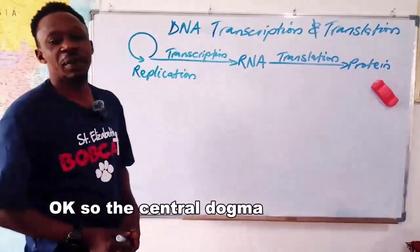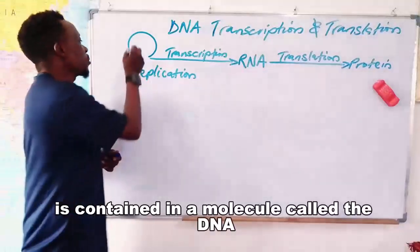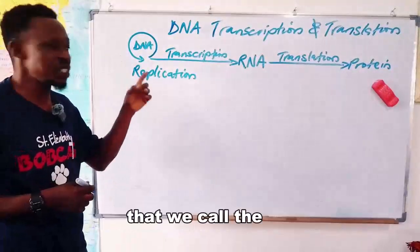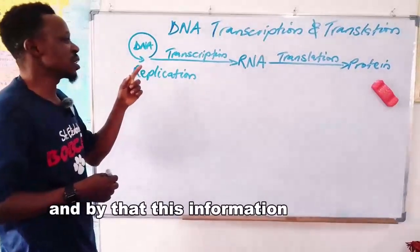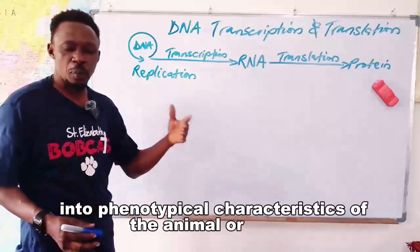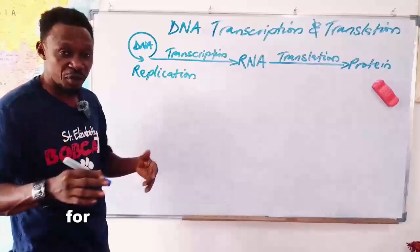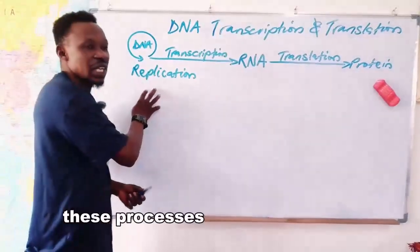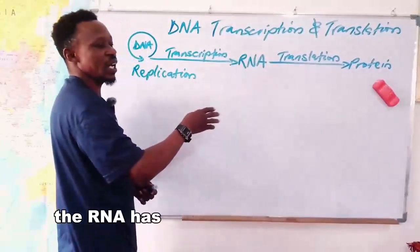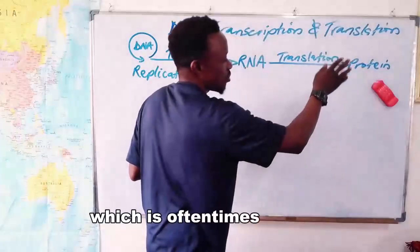The central dogma teaches that the hereditary information of life is contained in a molecule called DNA. All information that controls life is contained in this molecule. For that information to be expressed — to be made sense of into phenotypical characteristics of the animal or plant — it has to be copied into an intermediate molecule called RNA. The RNA carries that information, and it has to be interpreted into a functional product, which is oftentimes a protein.